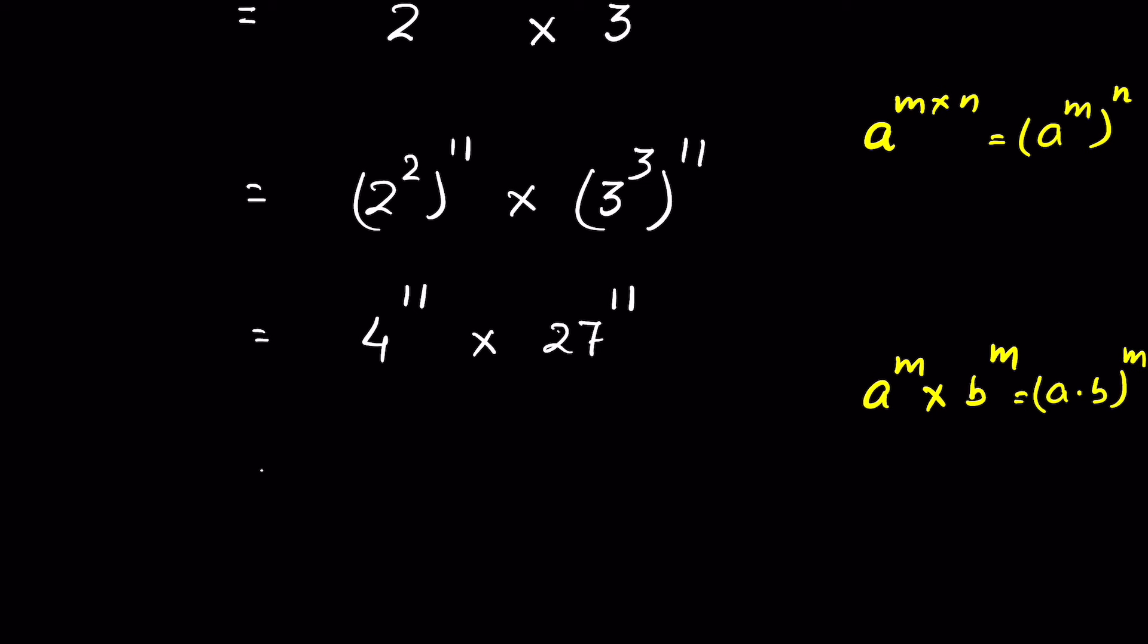So using this identity, we can write 4 times 27 whole to the power 11. 27 times 4 is 108.